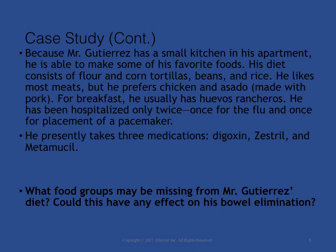Because Mr. Gutierrez has a small kitchen in his apartment, he is able to make some of his favorite foods. His diet consists of flour and corn tortillas, beans, and rice. He likes most meats but prefers chicken and asado. For breakfast, he usually has huevos rancheros. Mr. Gutierrez has been hospitalized only twice — once for the flu and once for placement of a pacemaker. He presently takes three medications: digoxin, lisinopril, and Metamucil. What food groups may be missing from Mr. Gutierrez's diet, and could this affect his bowel elimination?